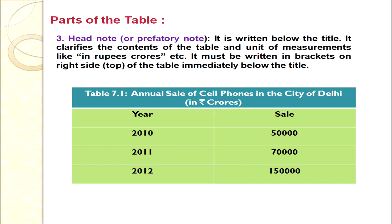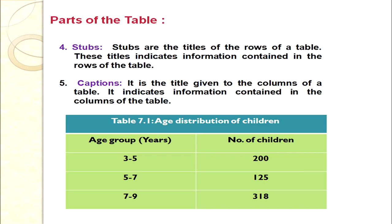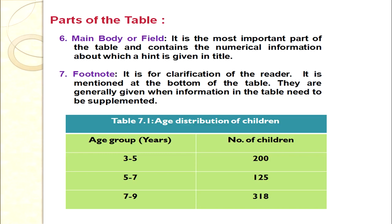Next we discuss stubs. In this example the stub is 'age group (in years).' Stubs are the titles of the rows of a table — they indicate the information contained in each row, such as age groups of children. Captions, on the other hand, are the headings of the columns. The caption is the title given to the columns of a table, indicating the information contained in those columns — for example, 'number of children.'